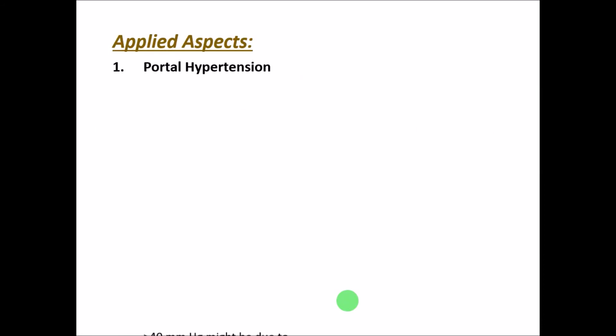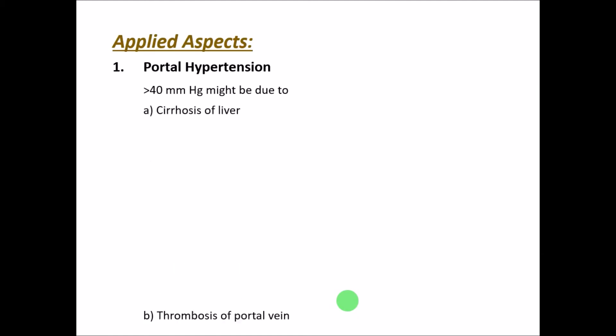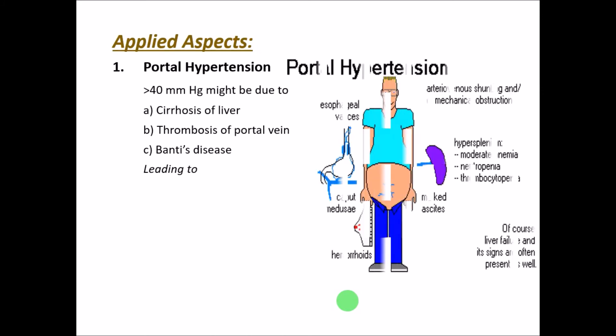Coming to the applied/clinical aspects: portal hypertension. The normal portal pressure is 10 to 15 mmHg, but if it increases beyond 40 mmHg it leads to portal hypertension. This may be due to cirrhosis of the liver, thrombosis of the portal vein, or Banti's disease.